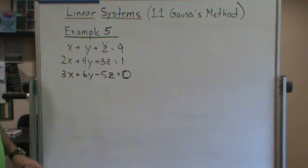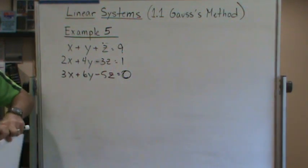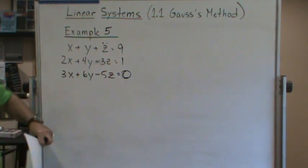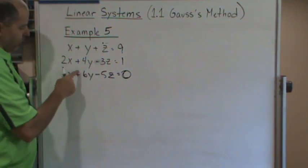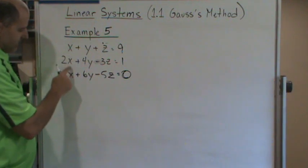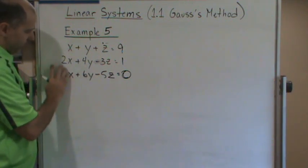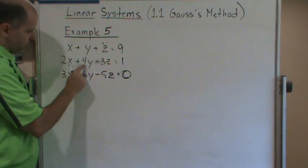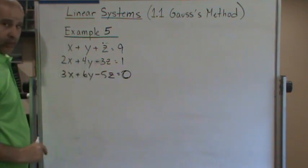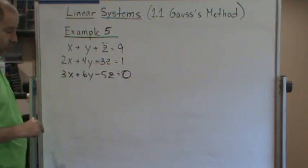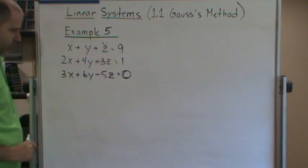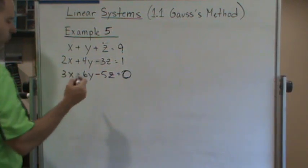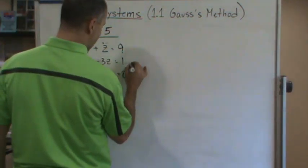Welcome back. In this example, notice that we're going to eliminate the x's and the y's so that we work down a diagonal — ending up with x, then y, then z. It basically goes down a diagonal of sorts. To do that, we're going to use elementary row operations, also called elementary reduction operations.